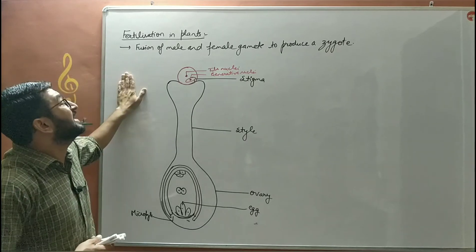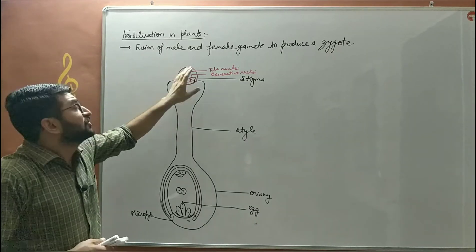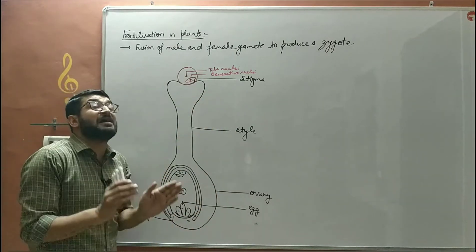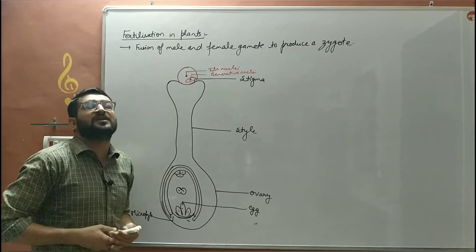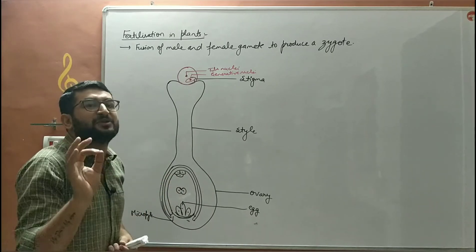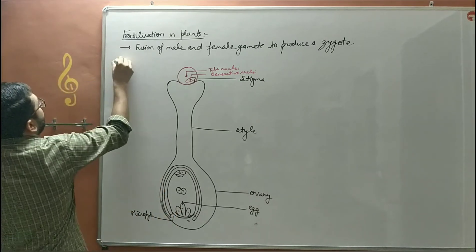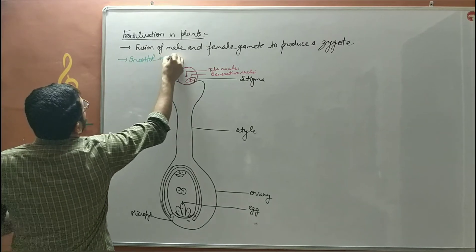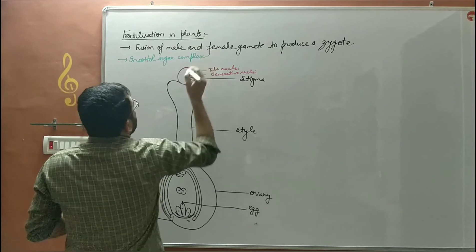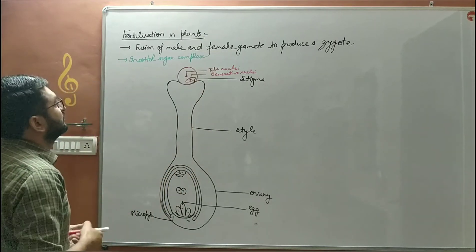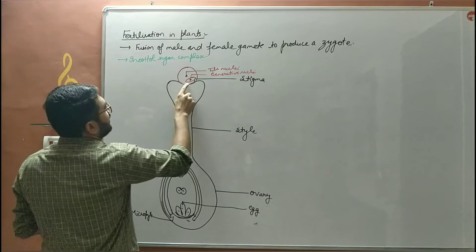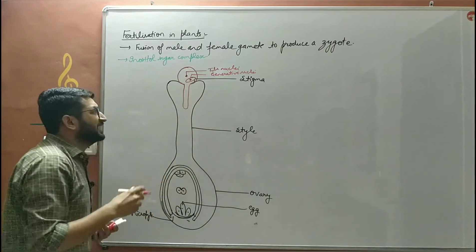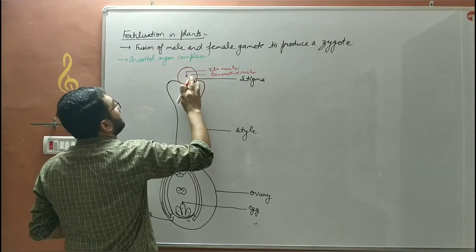So in the fertilization of plants, when the pollen grain lands on the stigma, the stigma checks compatibility and incompatibility. If the stigma finds it compatible, it will release a chemical — that chemical is the inositol sugar complex. In response to that chemical, the pollen tube is generated.